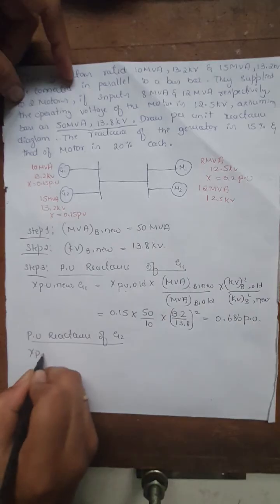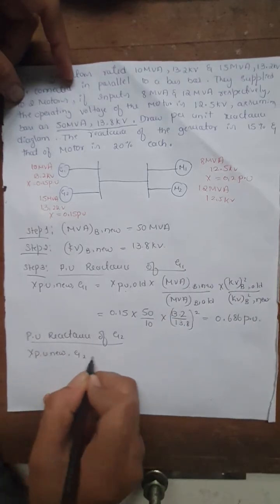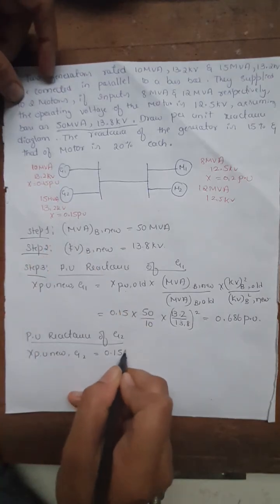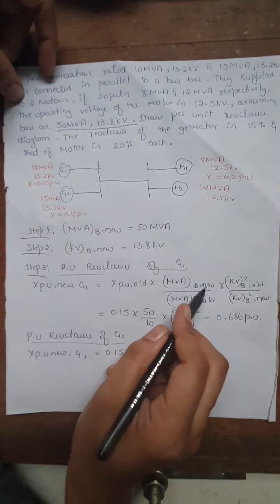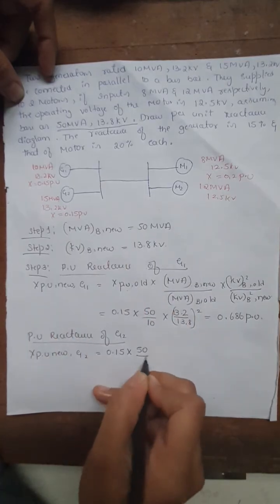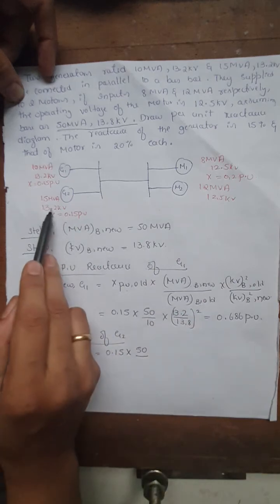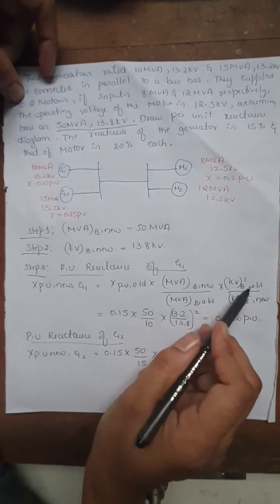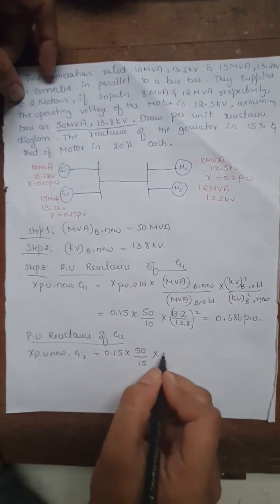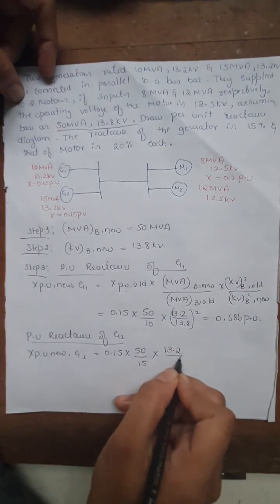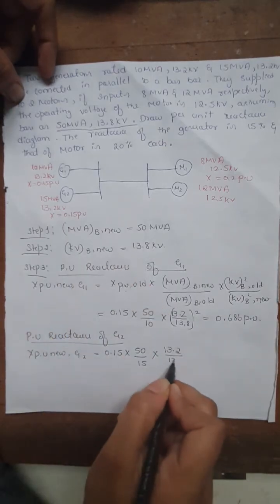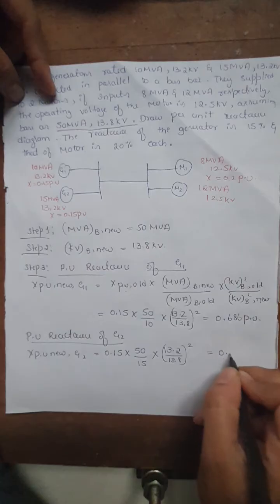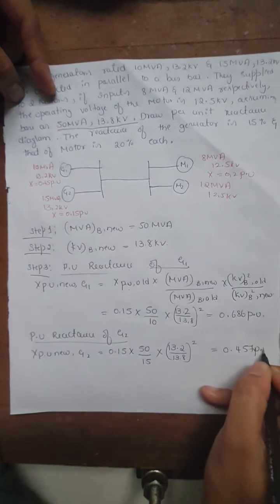For generator 2, using the same formula: X(pu, new) = 0.15 × (50 / 15) × (13.2 / 13.8)² = 0.457 per unit. The old MVA base is 15 MVA, the old kV base is 13.2 kV, and the new kV base from step 2 is 13.8 kV.